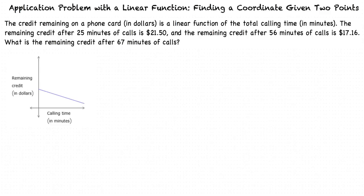The credit remaining on a phone card in dollars is a linear function of the total calling time in minutes. The remaining credit after 25 minutes of calls is $21.50, and the remaining credit after 56 minutes of calls is $17.16. What is the remaining credit after 67 minutes of calls?